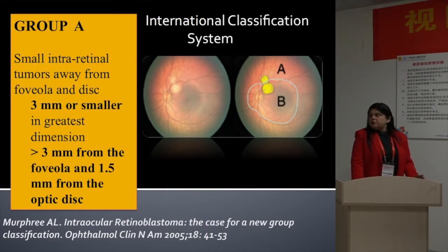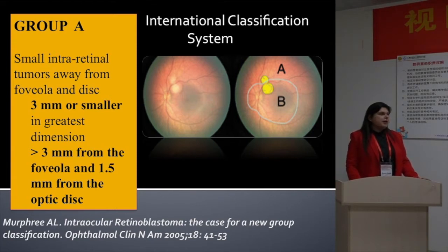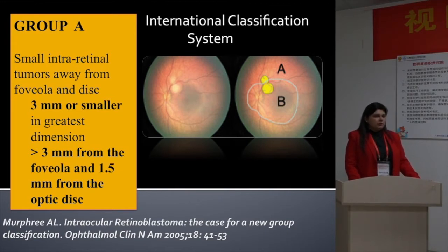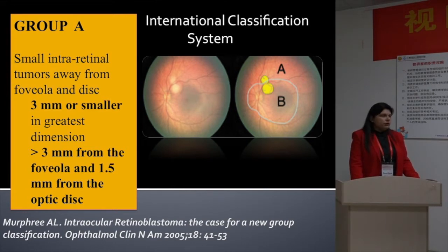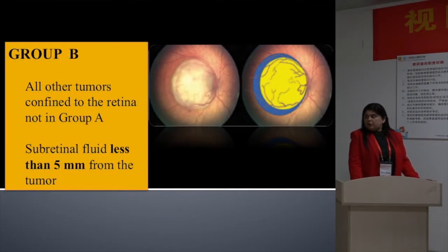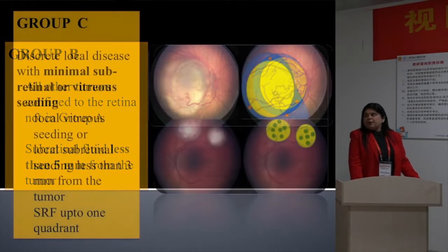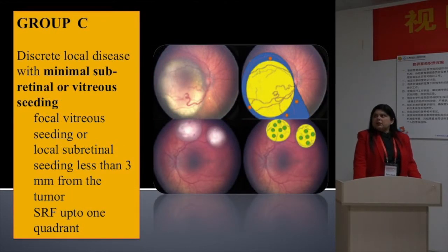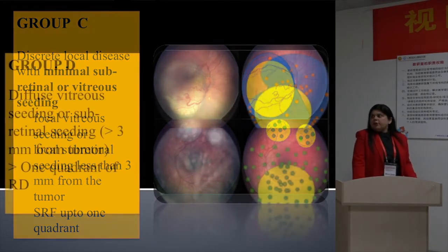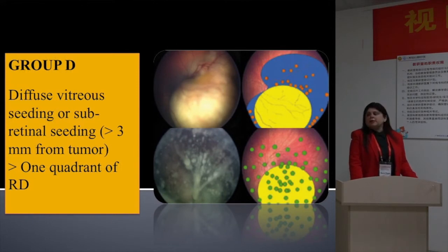We use the international classification system proposed by Murphree et al. Before knowing which cases are candidates for systemic chemotherapy, we should have a thorough understanding of this classification system. Group A cases are the smallest tumors that don't require systemic chemotherapy. Group B tumors are all other tumors confined to the retina, not in Group A. Group C involves minimal subretinal or vitreous seeding, and Group D involves diffuse vitreous or subretinal seeding.